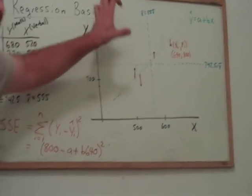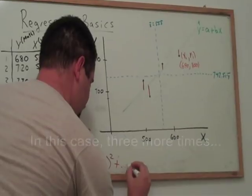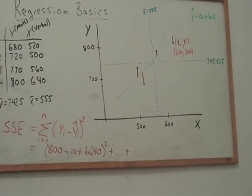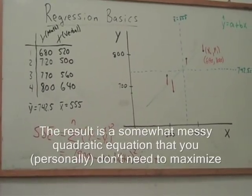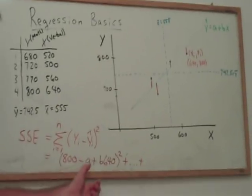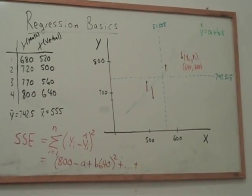We can do this for each of the observations, and sort of bookend it out with all four of these observations. It seems like a daunting task, and we're going to minimize that by picking a and b, so it minimizes it. That's the idea.